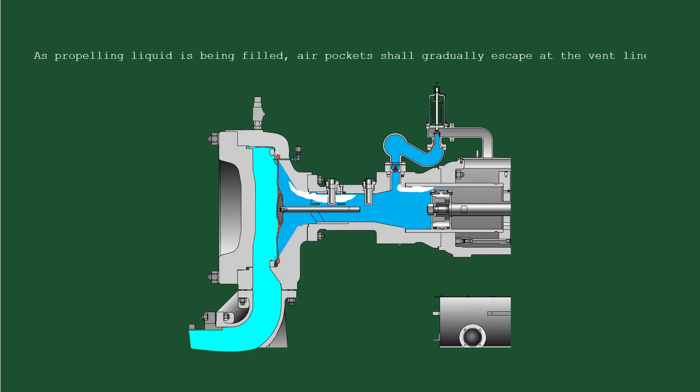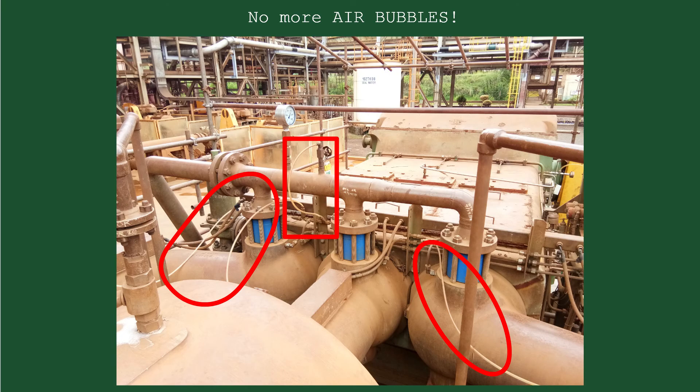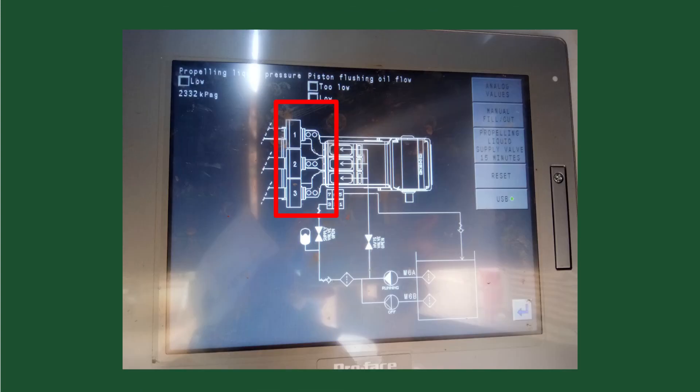As propelling liquid is being filled, air pockets shall gradually escape at the vent lines. Close the vent valve if there are no more air bubbles observed at the vent line and if the monitoring rod of the respective diaphragm deactivate the ZSL indicators.